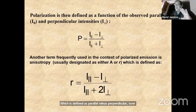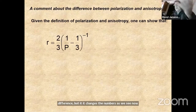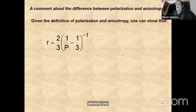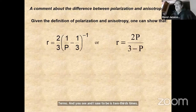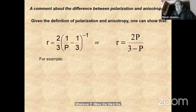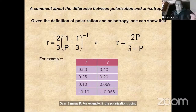Polarization is defined as the intensity parallel minus intensity perpendicular over the sum of those terms. Another commonly used term is anisotropy, designated A or R, defined as (I_parallel − I_perpendicular) / (I_parallel + 2·I_perpendicular). For example, if polarization is 0.5, anisotropy is 0.4; if polarization is 0.25, anisotropy is 0.2. Most modern instrumentation will give readout of both polarization and anisotropy.